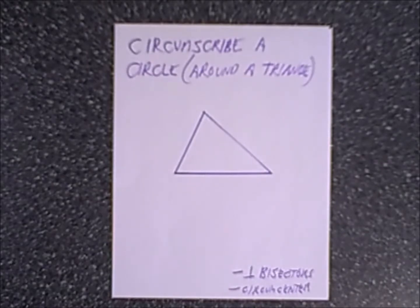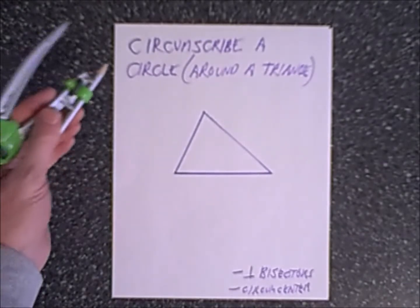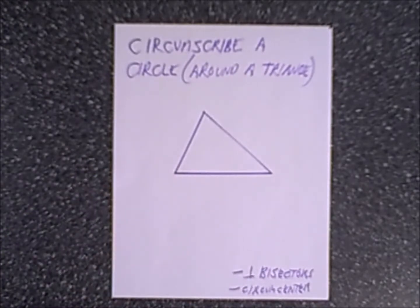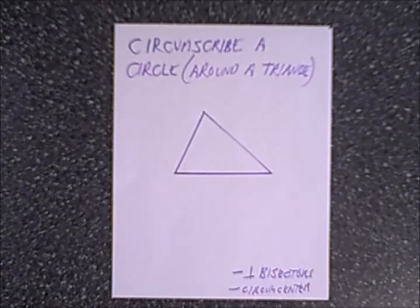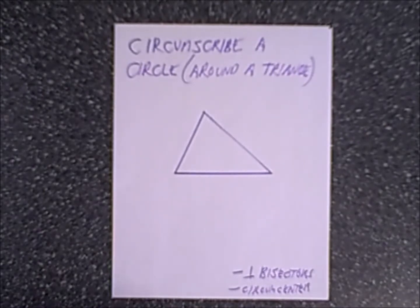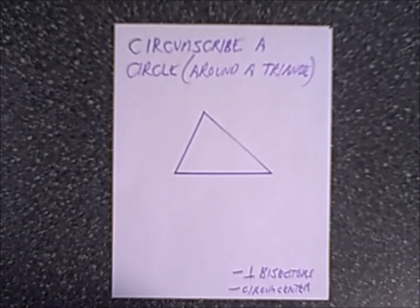In this geometry construction video, we are going to circumscribe a circle around a triangle, and in the next half of the video, we are going to inscribe a circle inside of a triangle. So let's get started. As we do this, you'll notice we'll discuss some of the theorems and properties of geometry and construction that help us get this done.